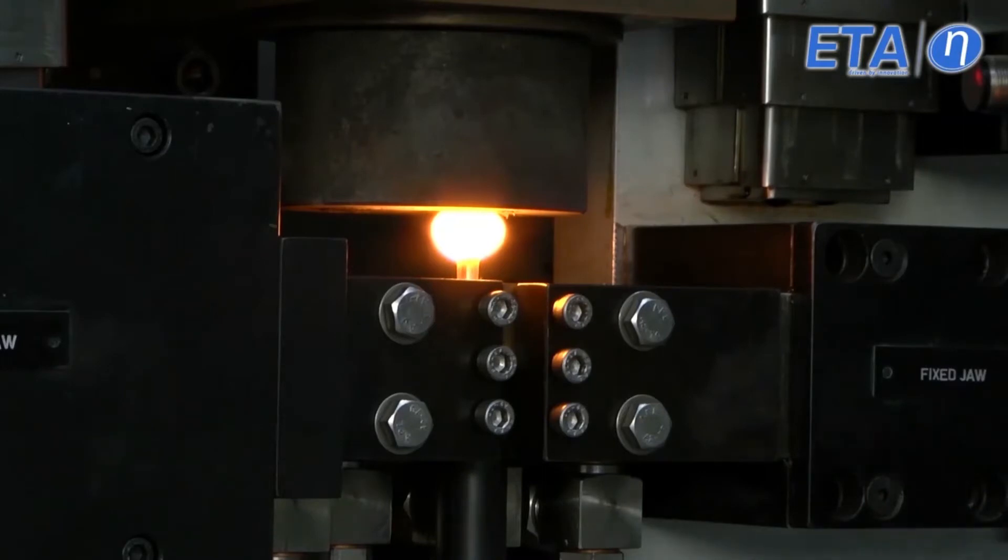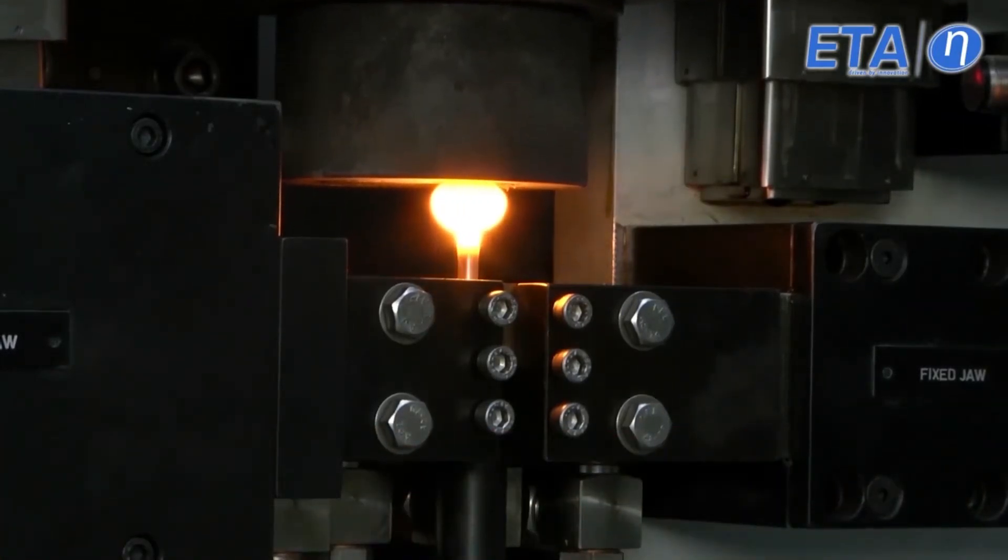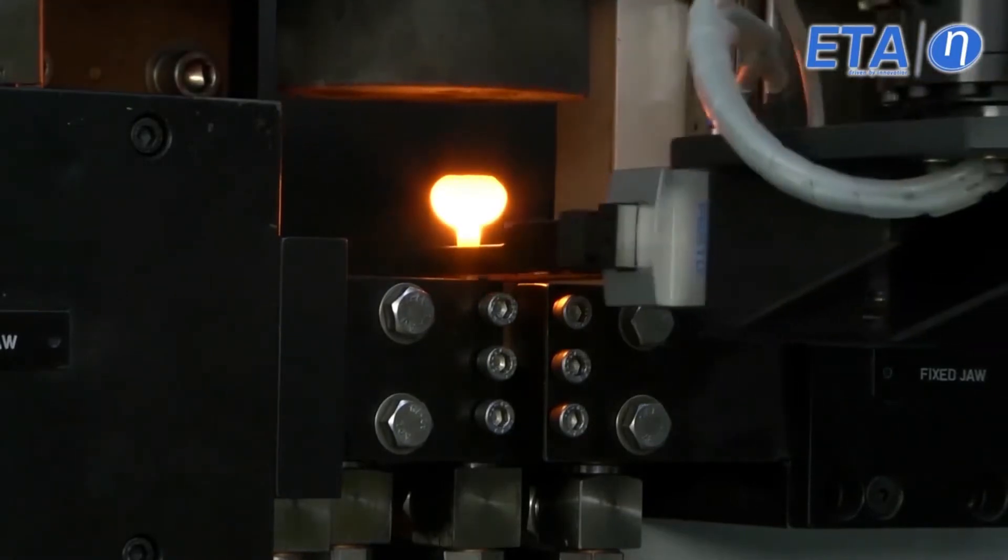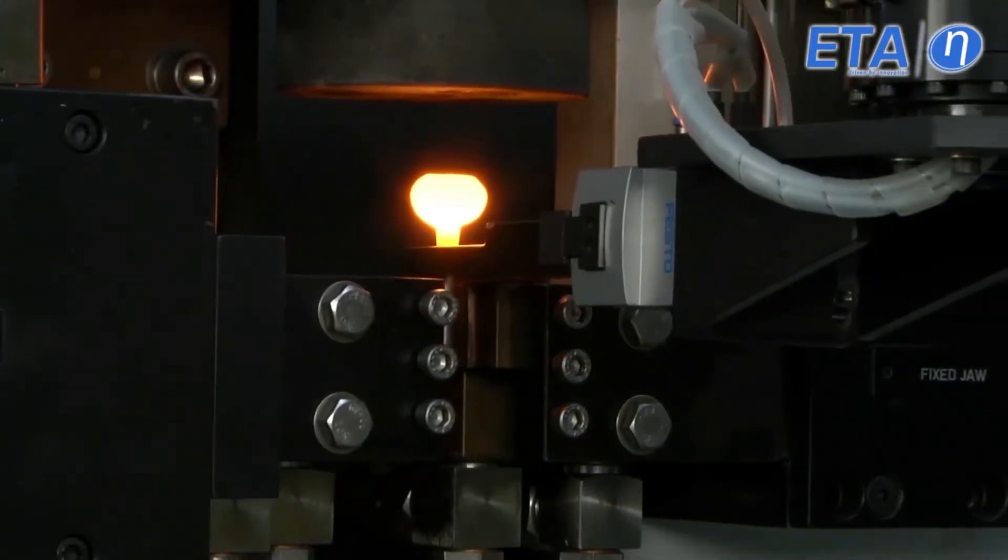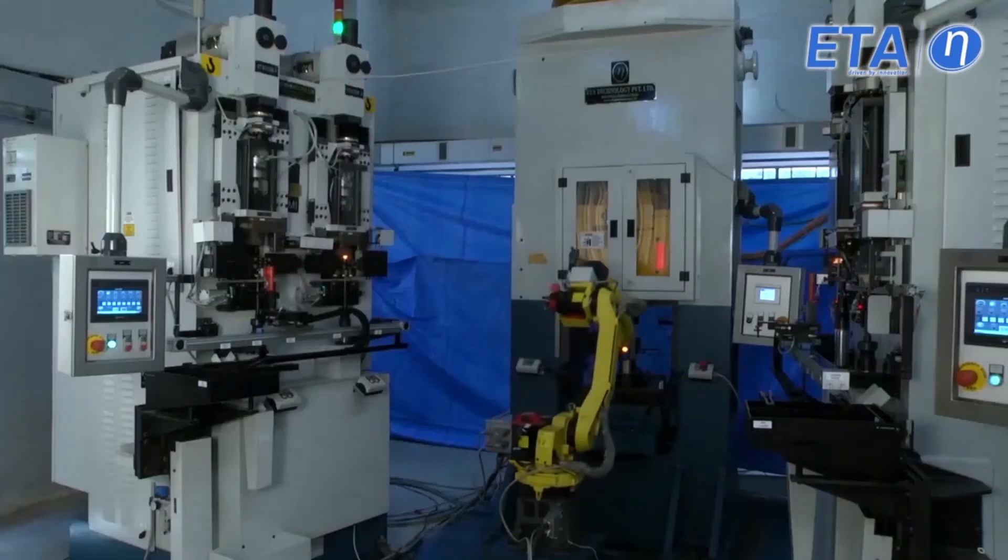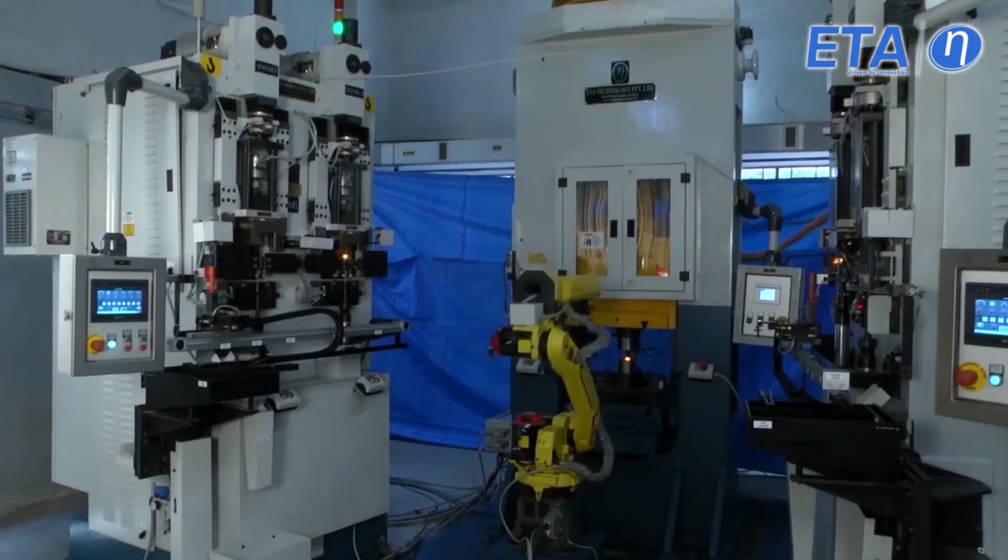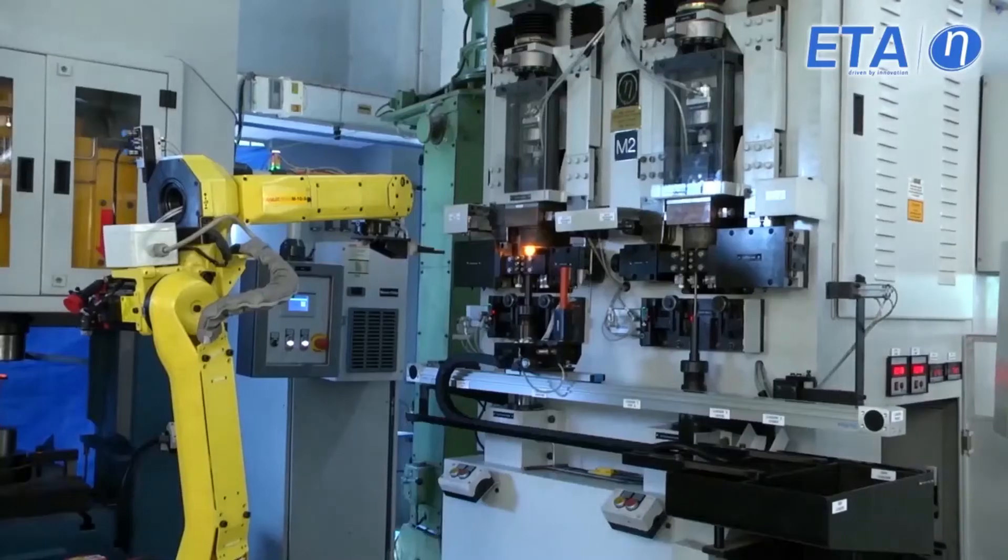The anvil and upset cylinder now travel upwards at a differential speed to form the bulb. The robot picks the bulb and transfers to the press. The forged job is ejected and transferred to the shoot automatically.